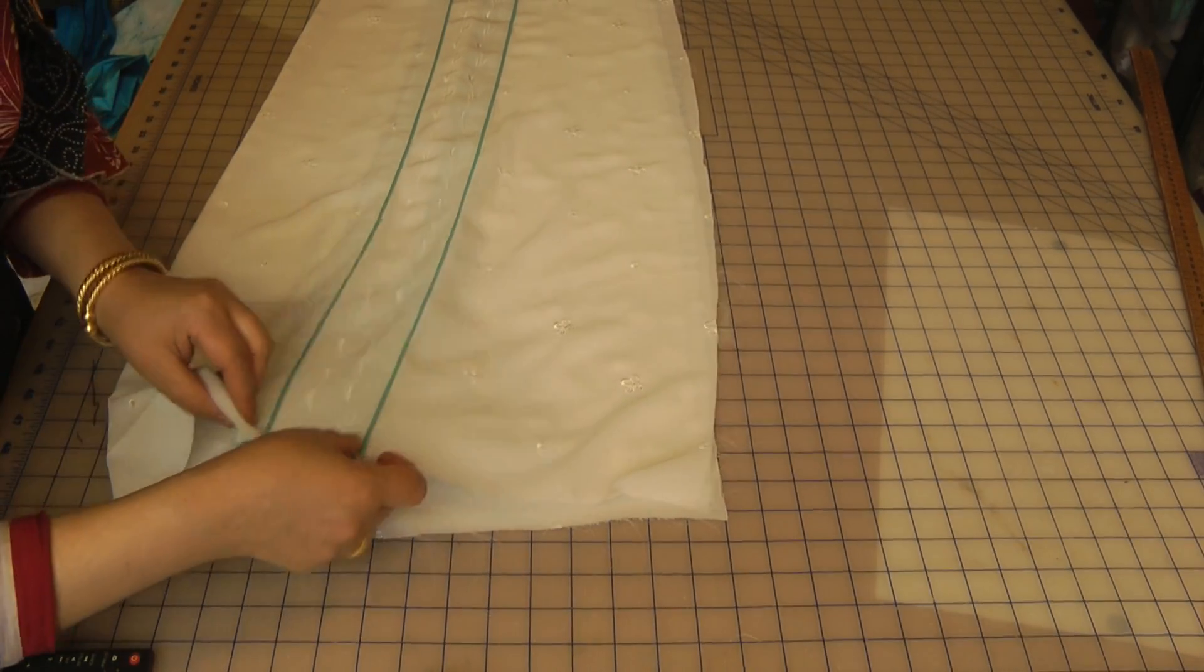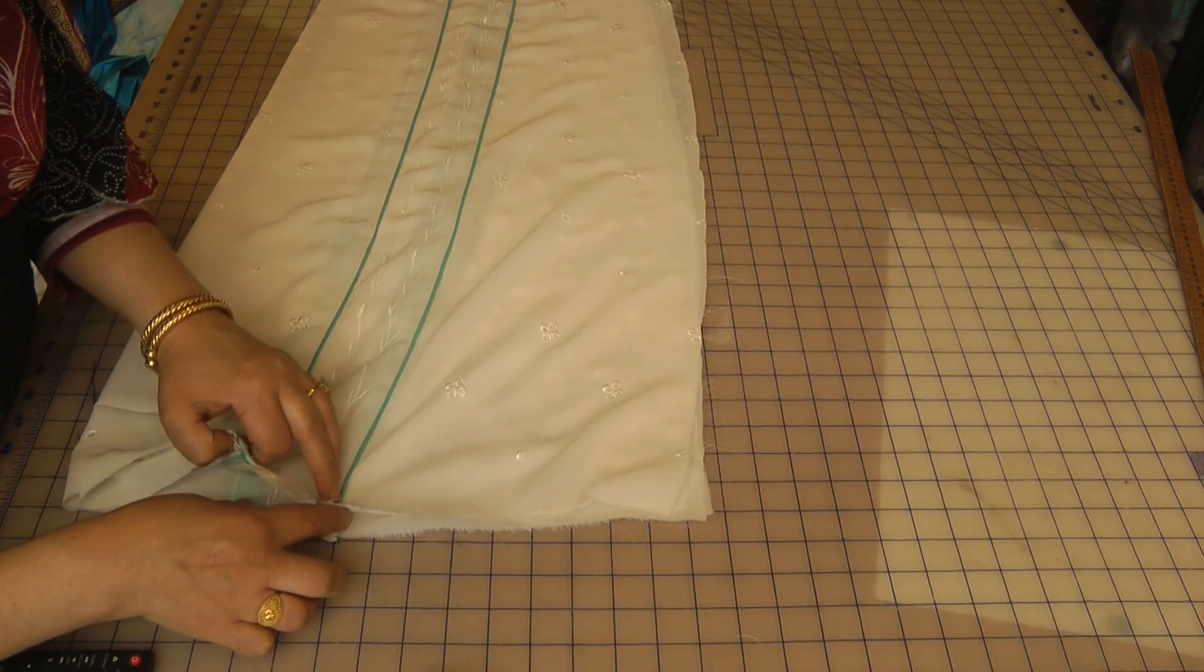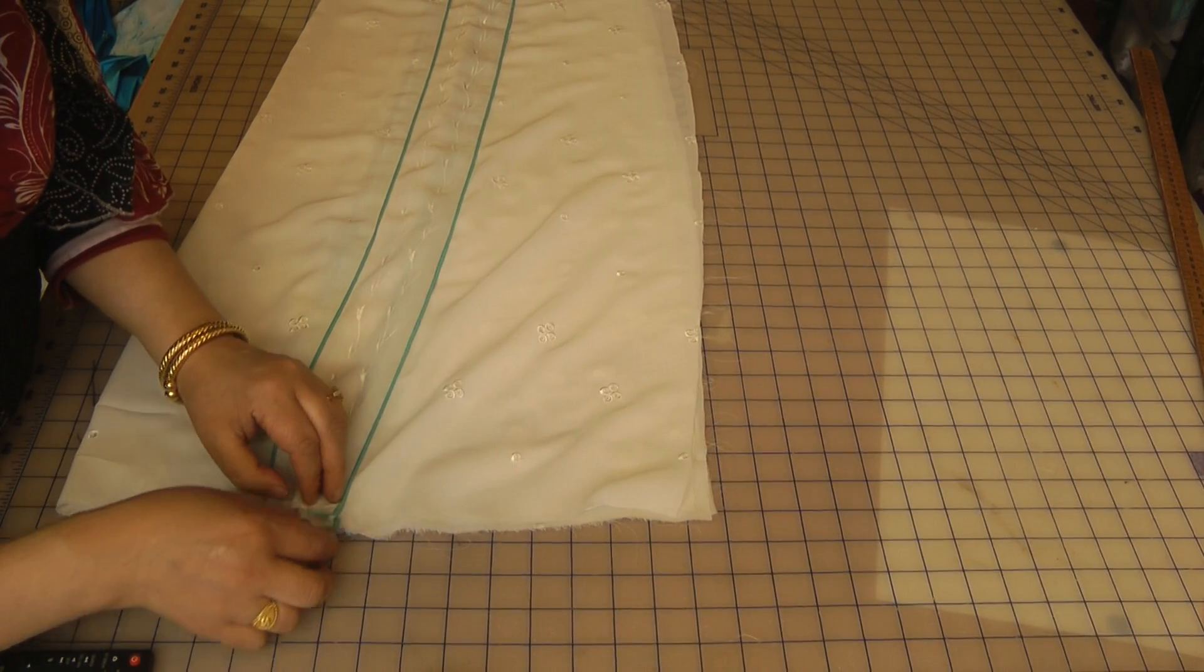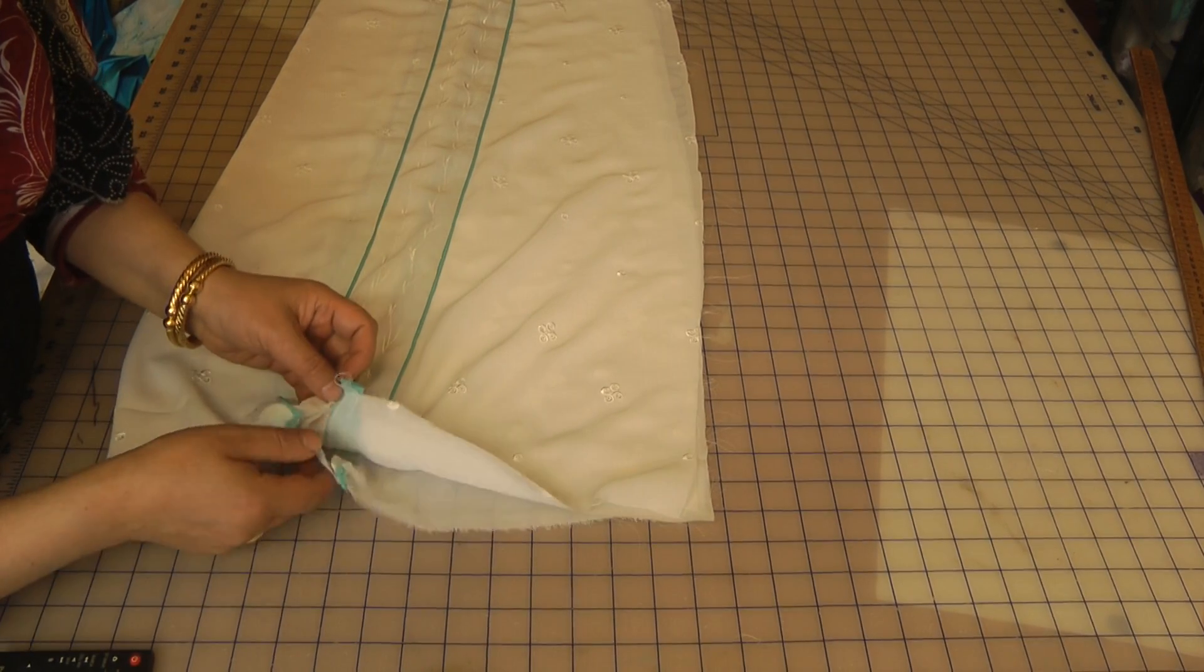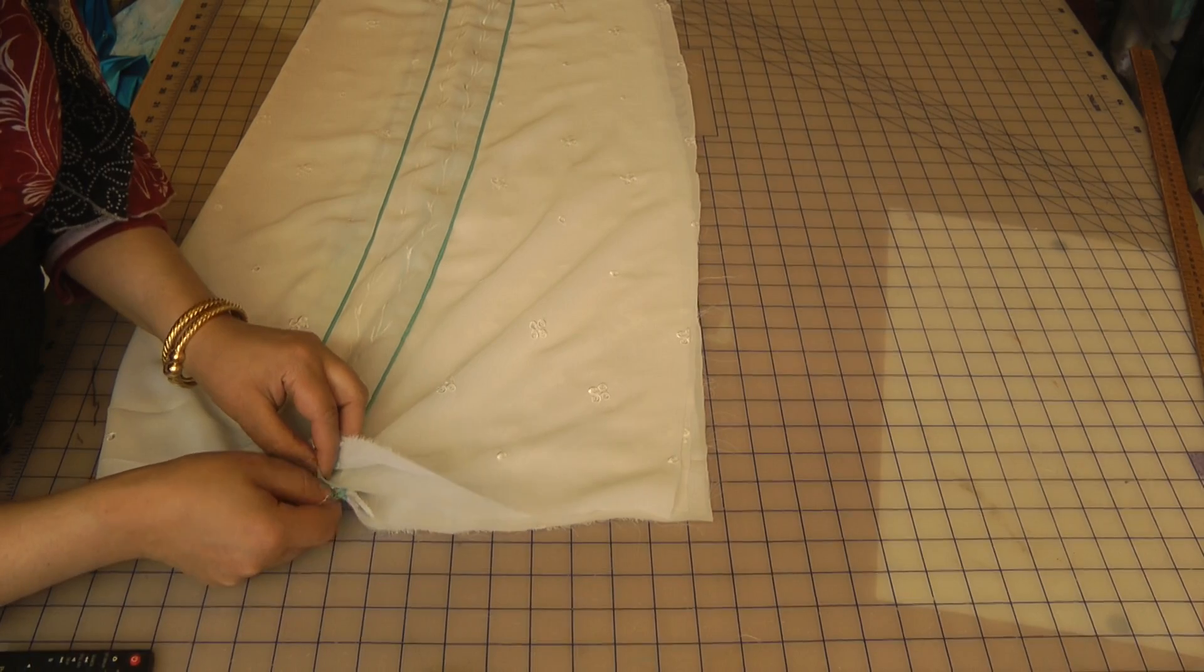And once we've got it halved, we're going to make sure that all the panels are on equal level. All four of the panels are on equal level.